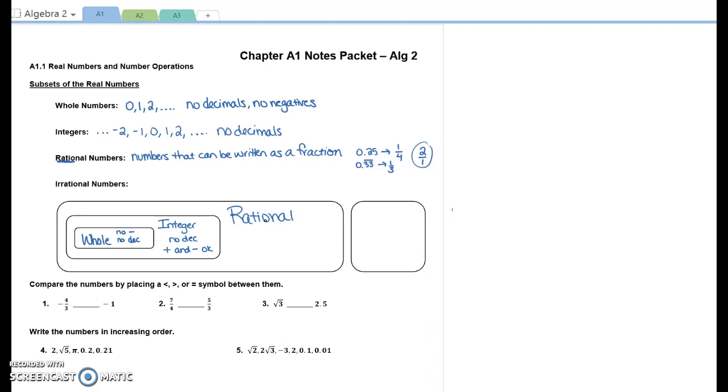In your assignment, it's going to ask you to classify a number and use everything that applies. So if a number is whole, it's on the very inside of this rational number thing. A whole number is an integer, it's also a rational. So if it asks you to classify the number 2, you would write whole integer rational. If it asks you to classify the number negative 2, negative 2 is an integer. What else is it? Rational. So if it's a whole, it's all three. If it's an integer, it's both integer and rational.